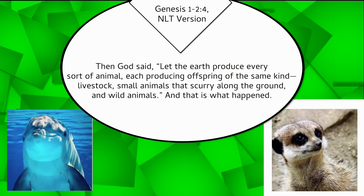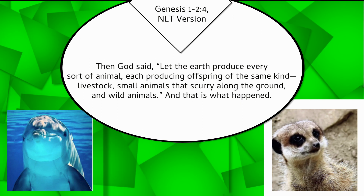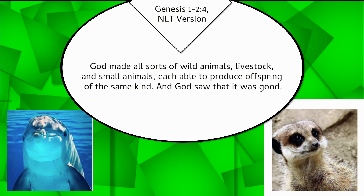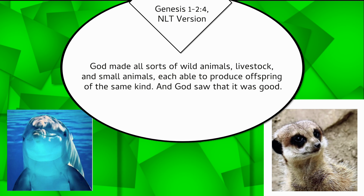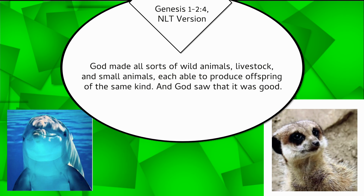Then God said, Let the earth produce every sort of animal, each producing offspring of the same kind. Livestock, small animals that scurry along the ground, and wild animals. And that is what happened. God made all sorts of wild animals, livestock, and small animals, each able to produce offspring of the same kind. And God saw that it was good.